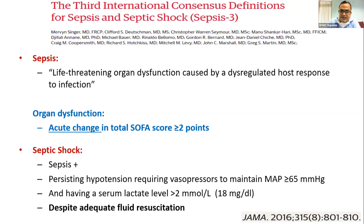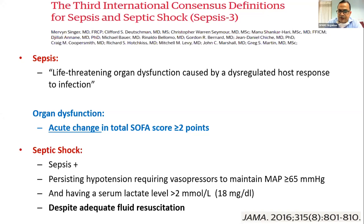For example, if a patient has a mean blood pressure in the 60s with feeble peripheral pulse and fulfills sepsis criteria, and you give 500 ml of normal saline and BP picks up and sustains above 65, that is not septic shock — no vasopressors are needed. The earlier terminology 'severe sepsis' has been dropped from current consensus definitions. Now there are only two things: sepsis and septic shock.